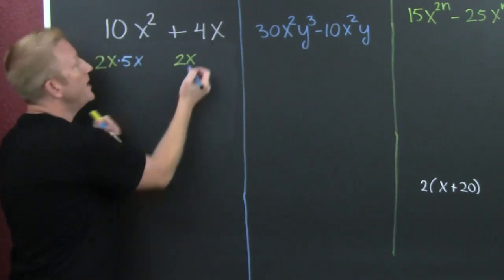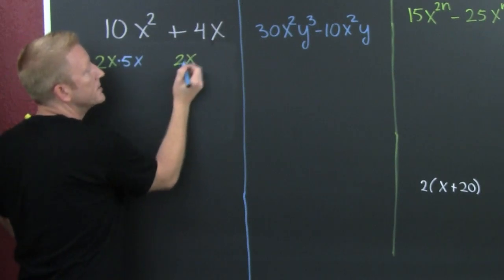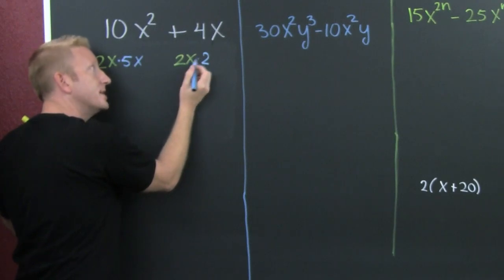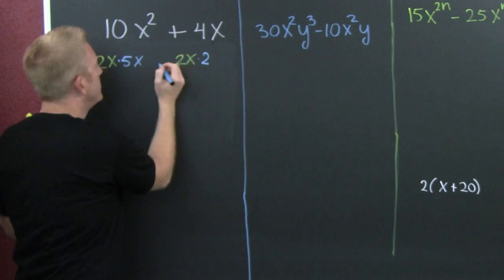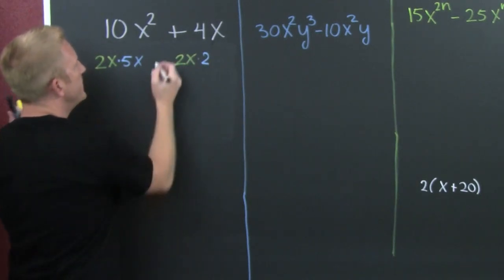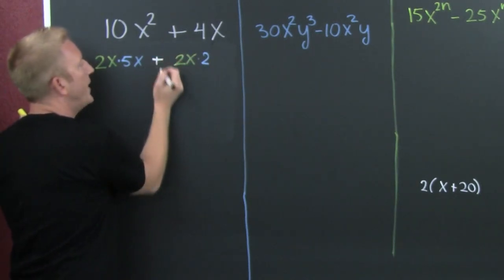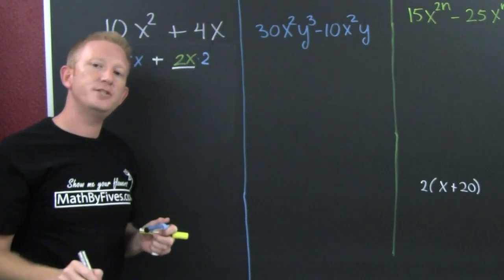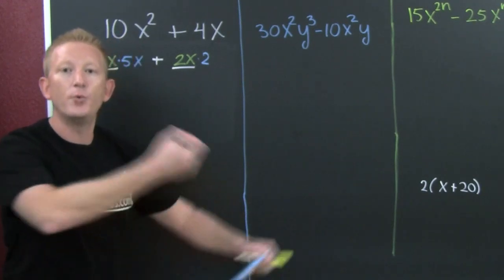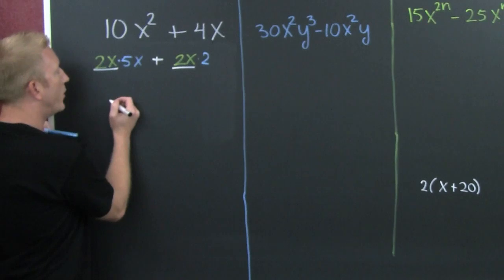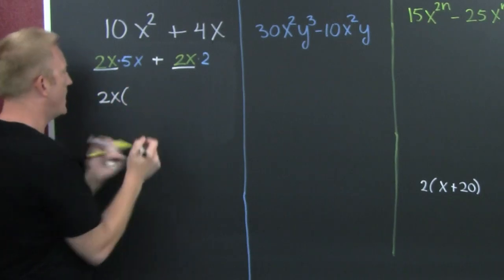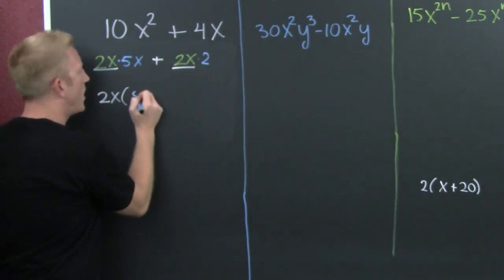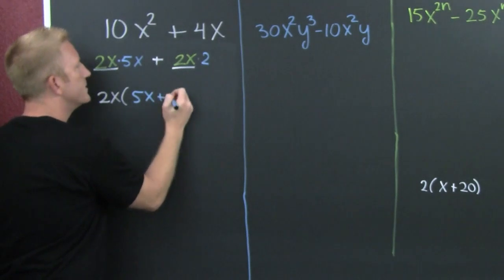On this first example I'm doing way more work than necessary, and eventually you will skip this step. But for now, so that we can be clear about what we're doing — over here, what do I multiply that 2 by to get 4? It's 2. What do I multiply that x by to get x? 1. And then my addition is still there. This is the greatest common factor — we see what they share and we factor it out. So then I pull that 2x on out, and what's left over on the inside? That blue stuff — that's your 5x plus your 2.